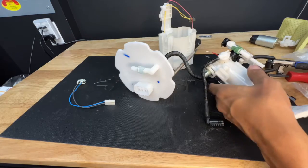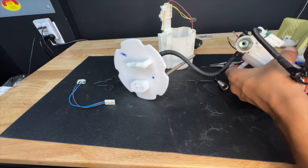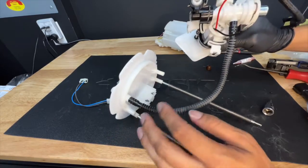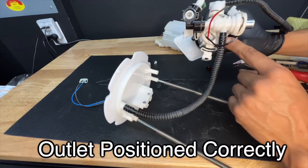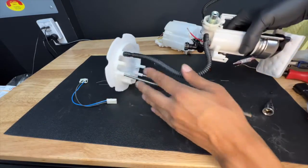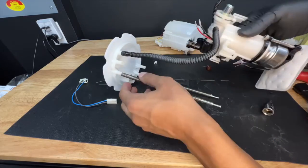Go ahead and add some thread locker on there. Thing's freaking leaking. You don't need much, just a little dab. Before you tighten anything, make sure that the inlet is inside this tube here. And then you want to tighten until it's kind of snug. Do not over tighten.